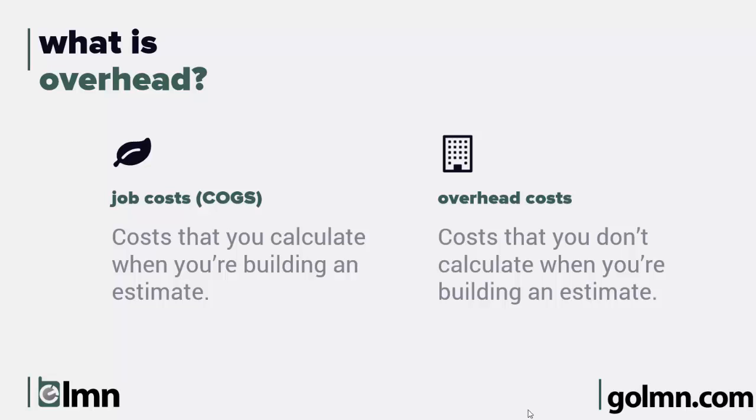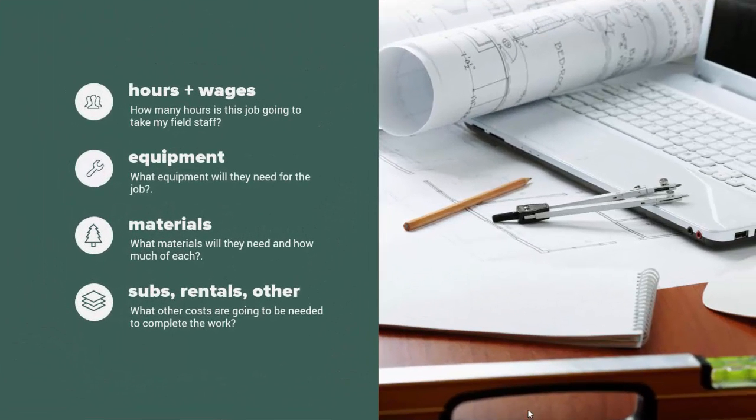Here's a list of the usual job costs. The first is hours and wages. When an estimator builds a price for a job, one of the first things they figure out is how long it's going to take and how many people are needed on site. Then you'll have a cost for average wages plus payroll taxes, workers' comp, and other variables. Next is equipment. It's more accurate to estimate jobs when you're pricing equipment into the job — if the job needs a skid steer, pickup truck, and mini excavator, the job pays for all three. If the job doesn't need that big equipment, it shouldn't have to absorb those costs.